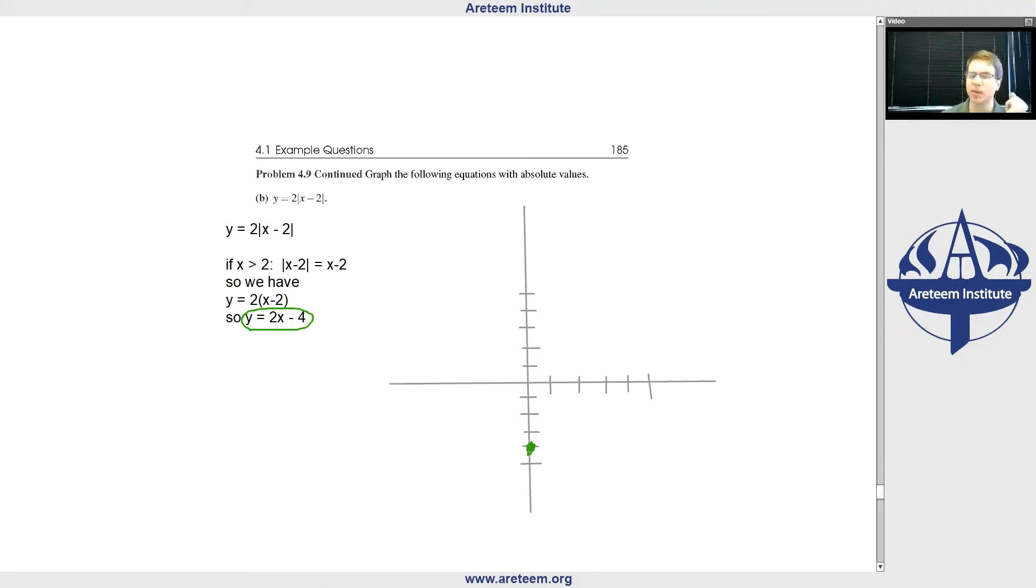So, for example, if we plug in 2, we get 0. It's easy to see 2 times 2 minus 4 is 0. So here is our equation of this line.